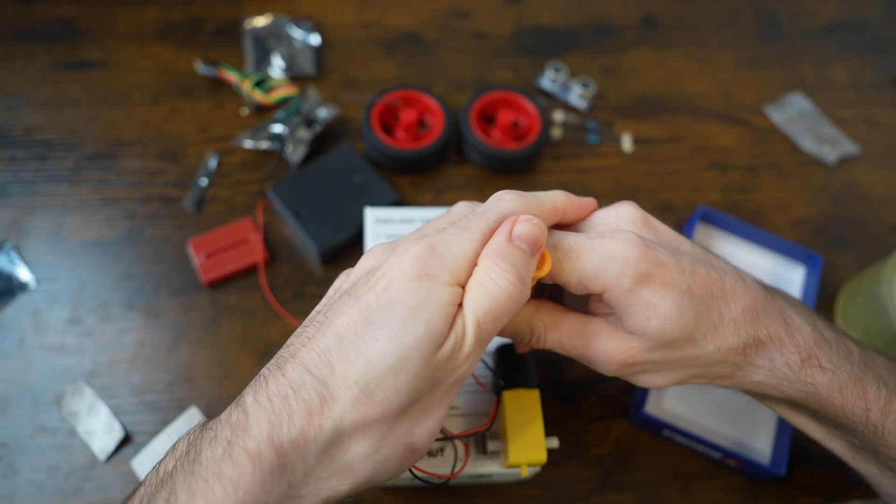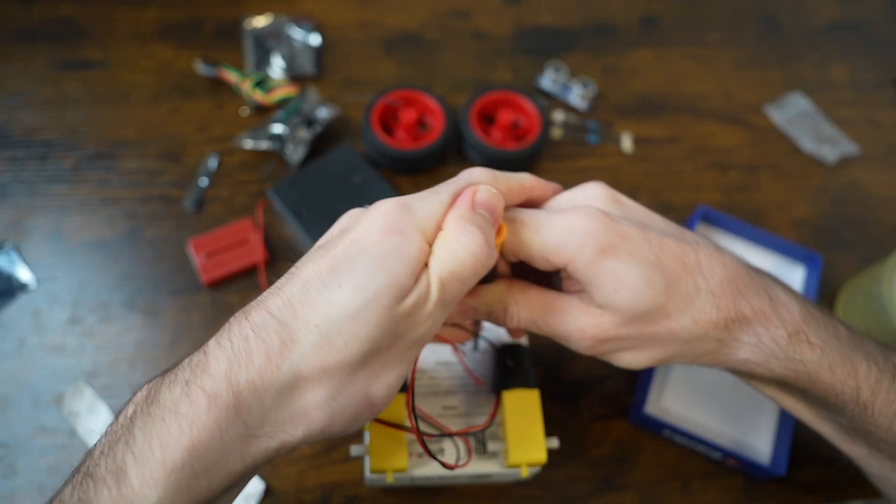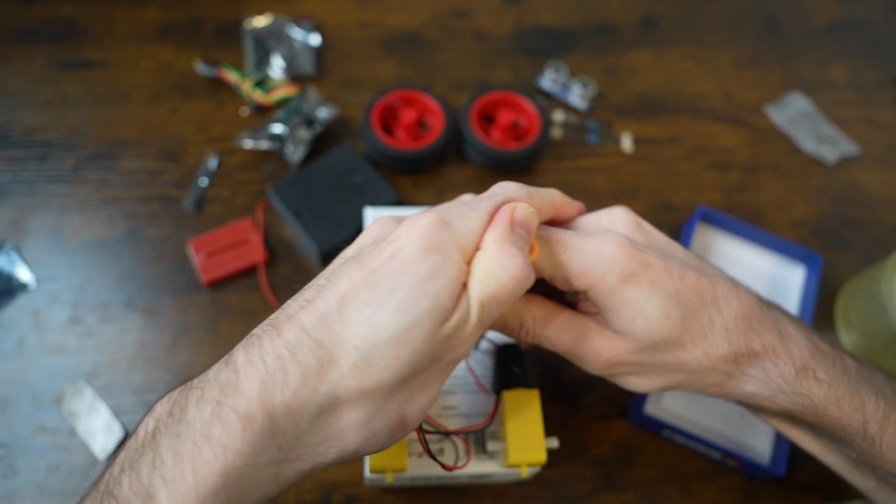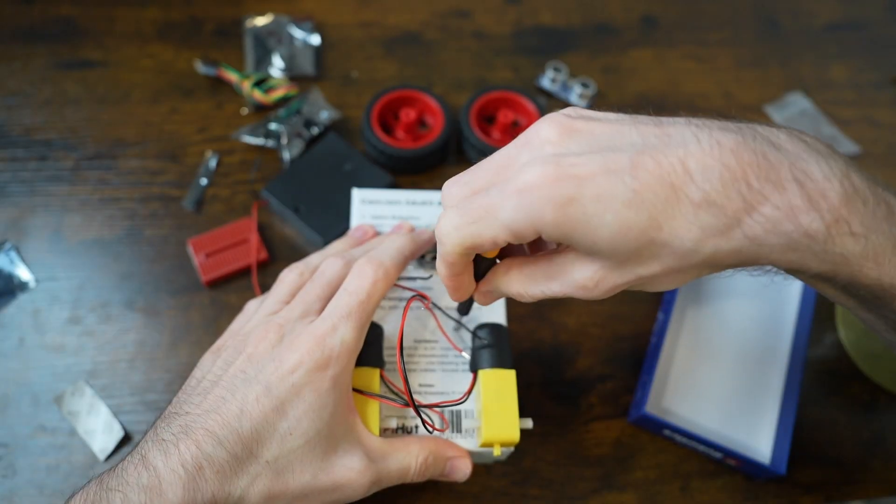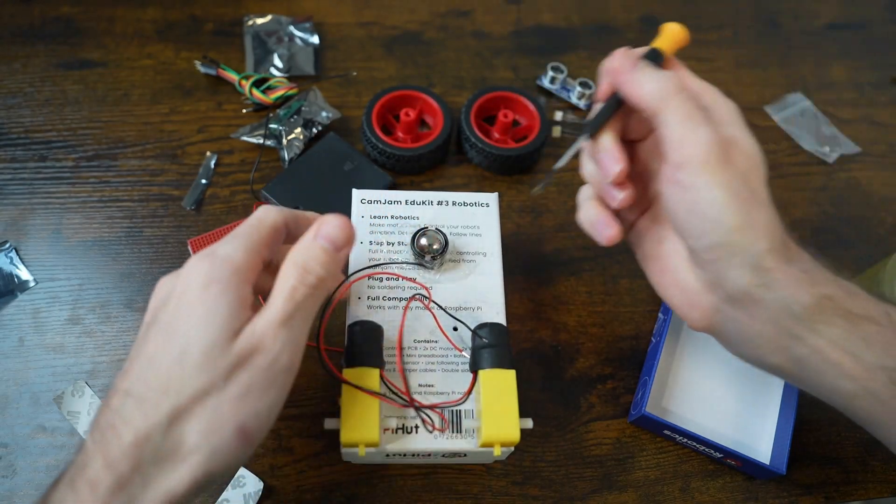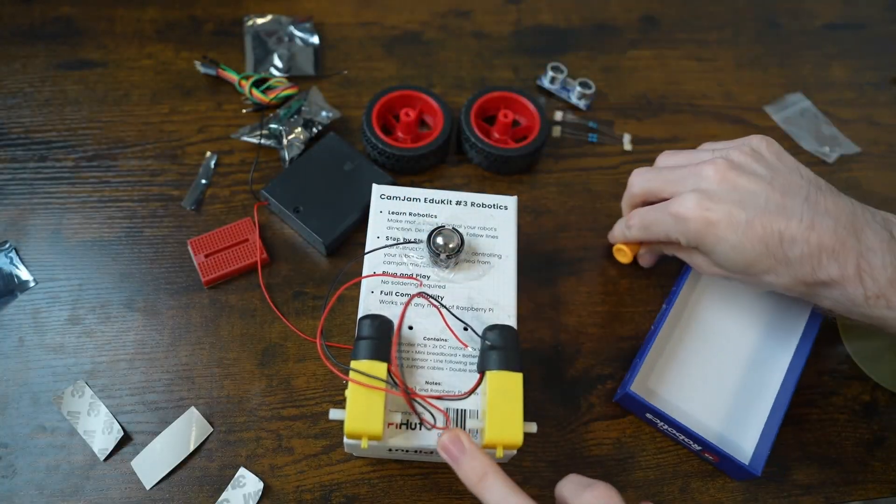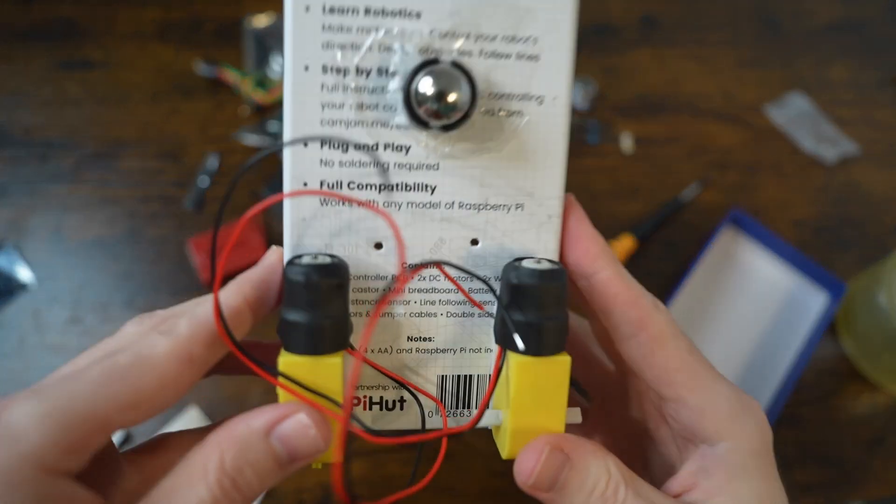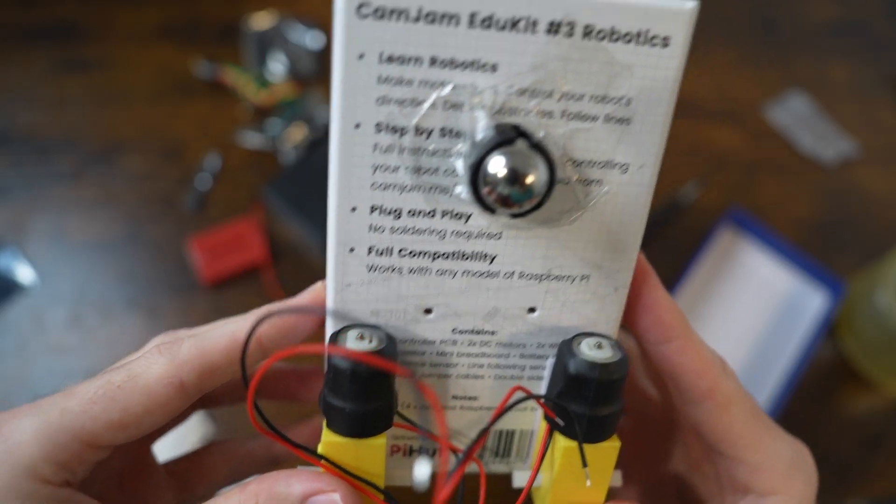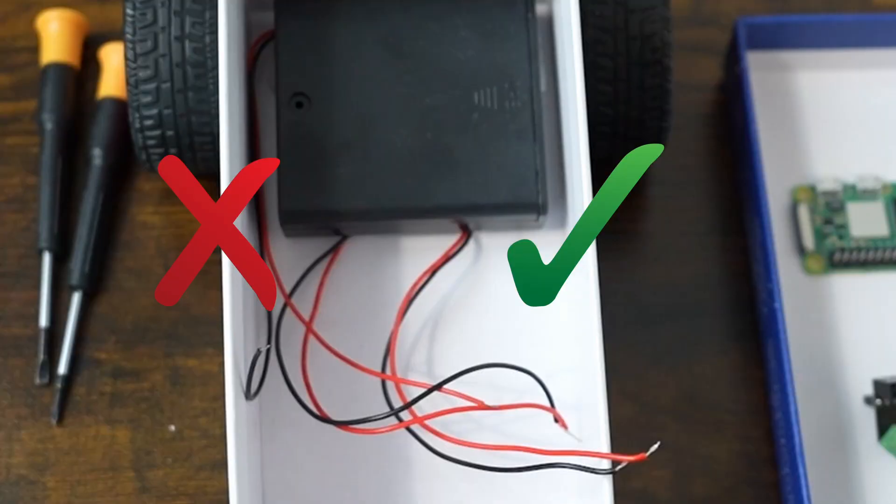Now punch holes through the bottom to feed the wires through. I'm using my screwdriver with a lot of pressure, as it's all I have access to, but I'd recommend using the drill for this step. I'd also recommend choosing the hole position so that it's not directly underneath the battery box, shown in this snapshot.